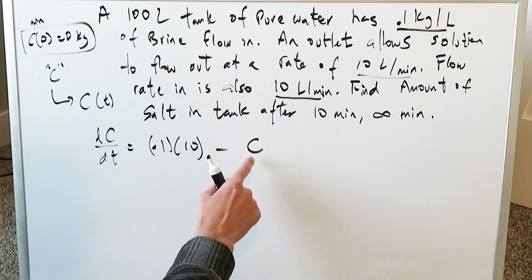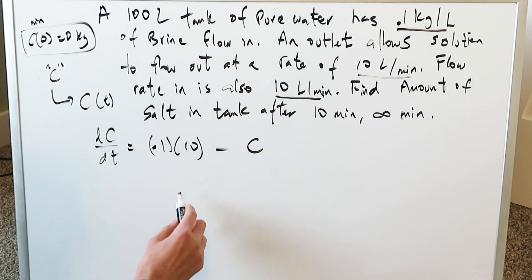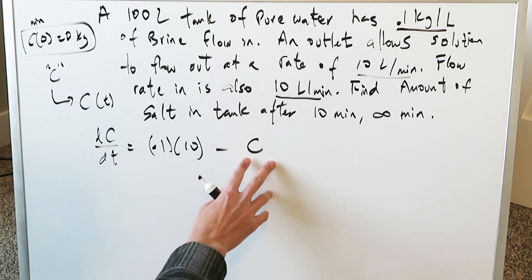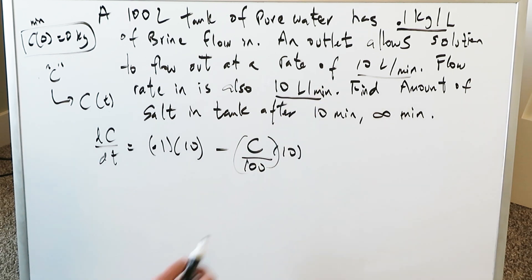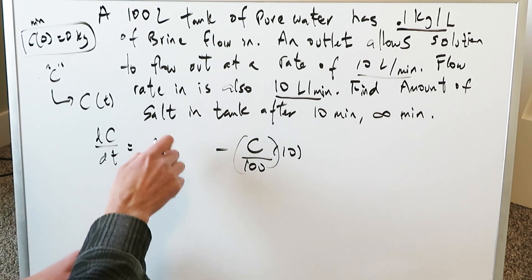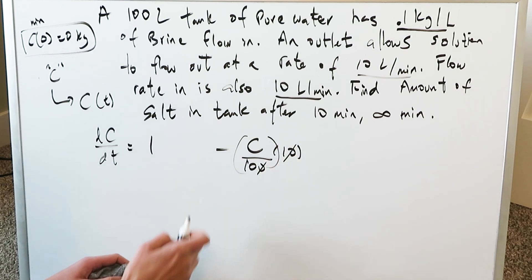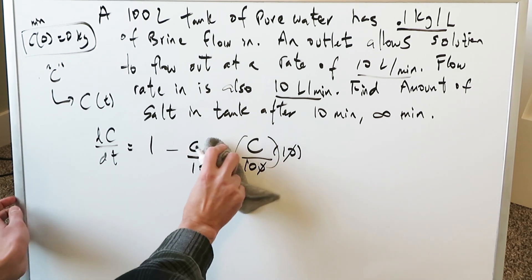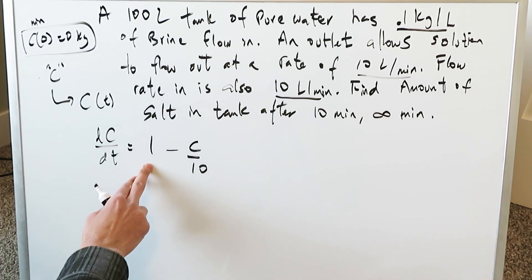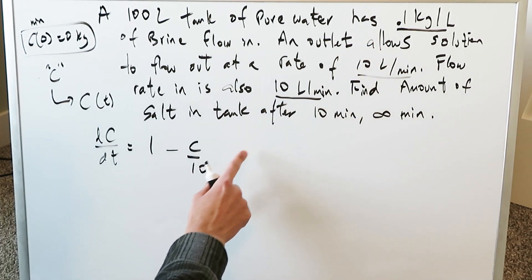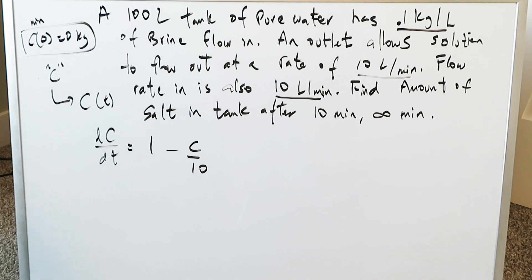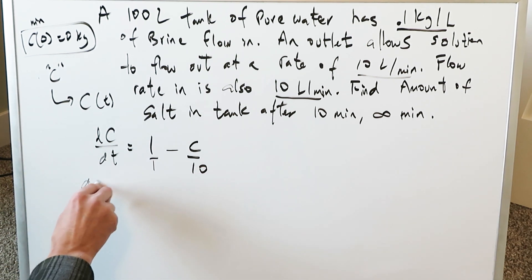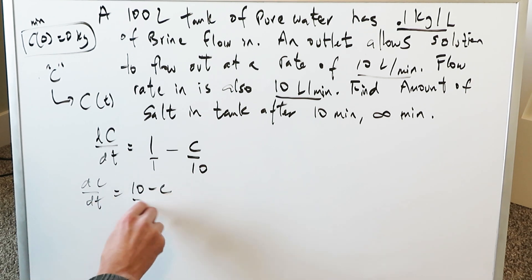What's coming out of the tank after mixing? We have some concentration — we don't know what it is, but concentration is always some amount divided by volume. The volume is 100 and it's flowing out at the same rate of 10 liters per minute. Simplifying: 0.1 times 10 gives 1 for rate in, and 10 divides into 100 giving c/10 for rate out. The differential equation becomes dc/dt = 1 - c/10.